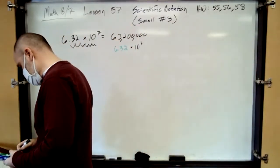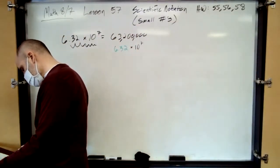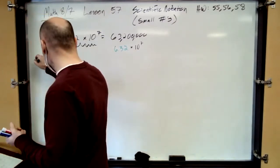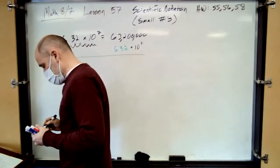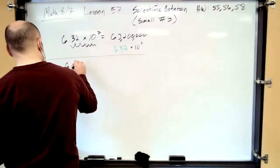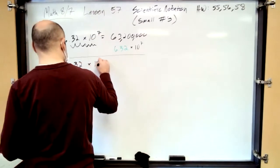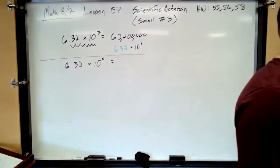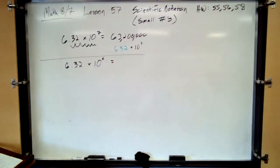Okay? So, now let's do the same thing with small numbers. Well, first of all, in between big numbers and small numbers is a zero. Or, what if it was 6.32 times 10 to the zero? What does that equal in scientific notation, in standard notation?